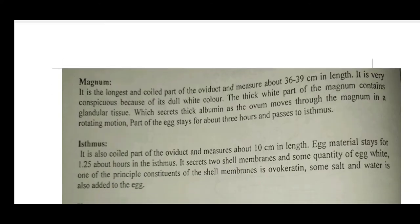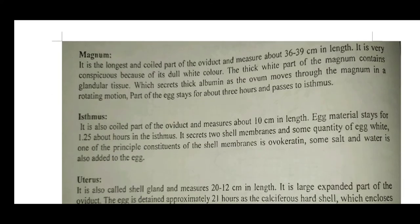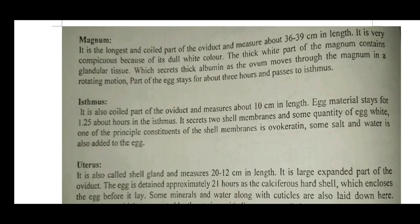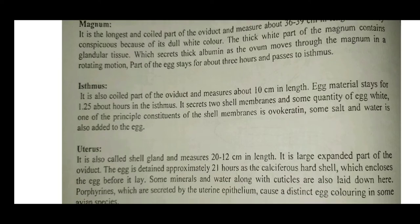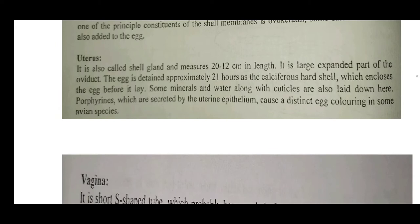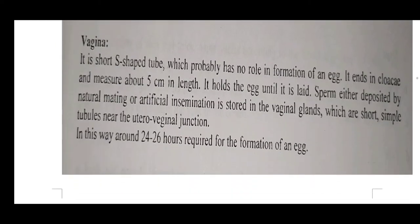The magnum is the longest and most prominent part of the oviduct, about 36 to 39 cm in length. It is conspicuous because of its dark white color. The glandular tissue of the magnum secretes thick albumen as the ovum moves through it in a rotating motion. The egg part stays in the magnum for about 3 hours before passing to the isthmus, and then to the uterus and vagina.